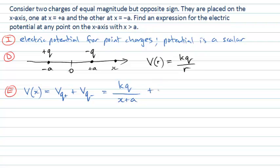And we are going to add to that the potential from the negative charge, which will be k times negative q, and the distance from our location x to that negative q charge will be x minus negative a.